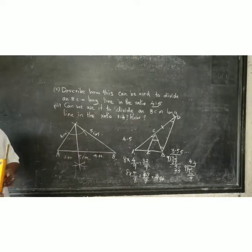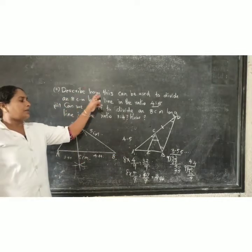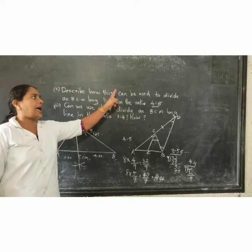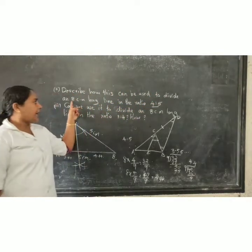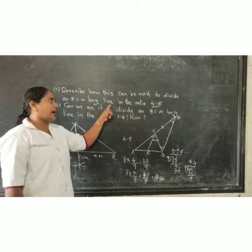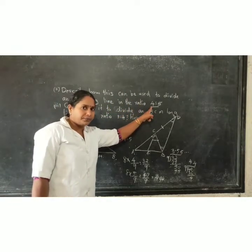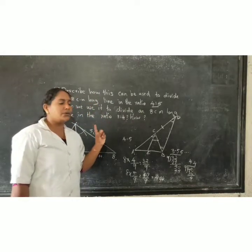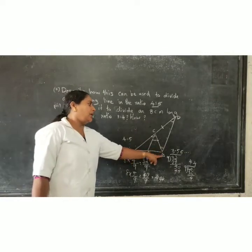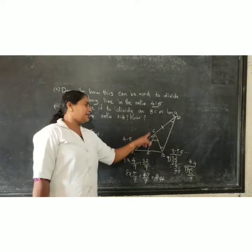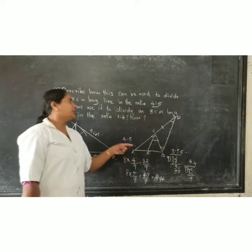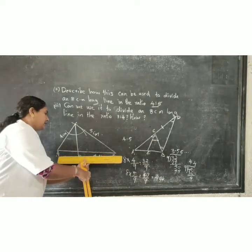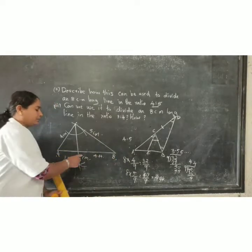Describe how this can be used to divide an 8 cm long line in the ratio 4 is to 5. We want to use the first question's idea. Draw a triangle A, B, C. The angle bisector divides in the ratio. Similarly, draw 8 cm first using scale and draw a line A, B. Mark 8 cm.